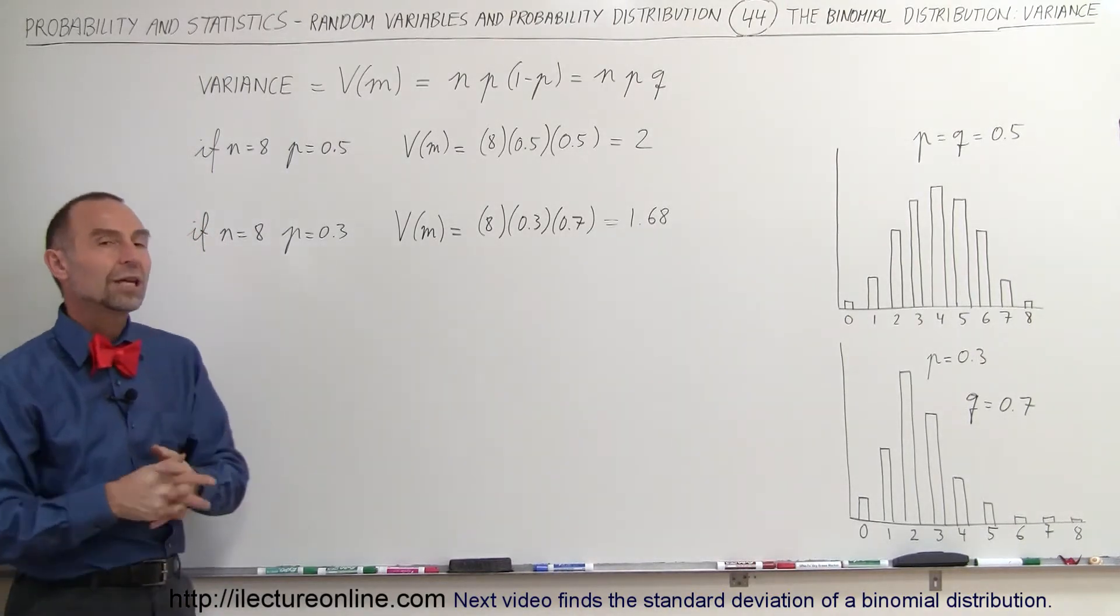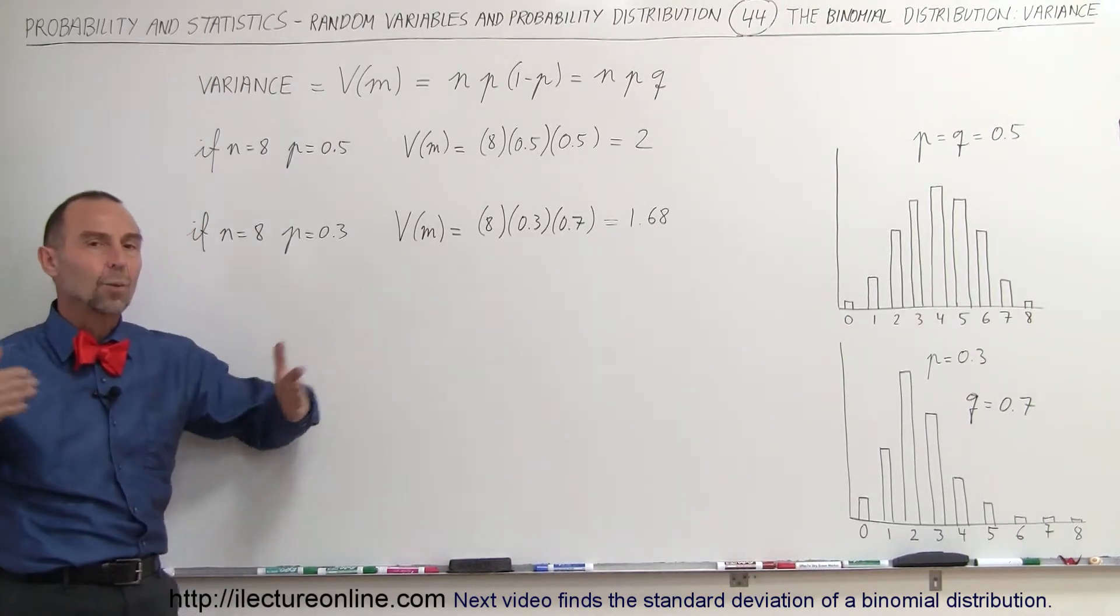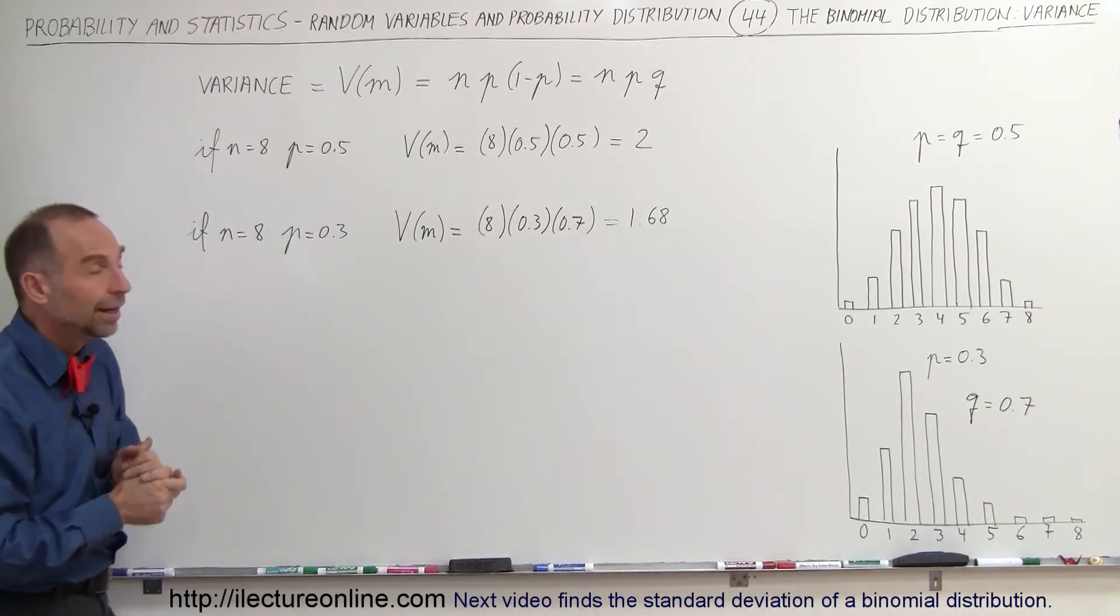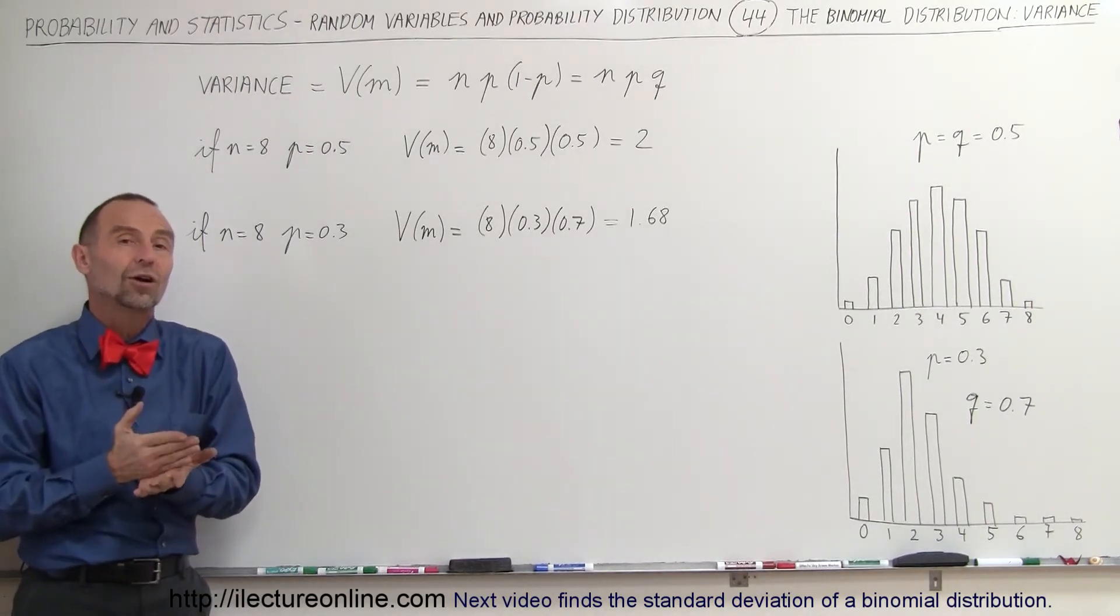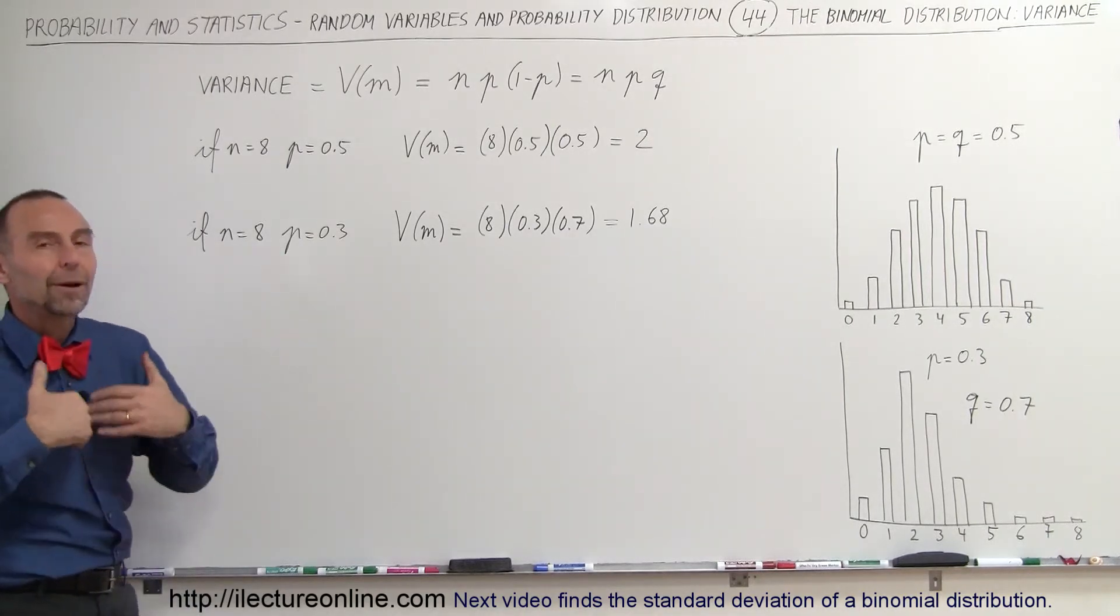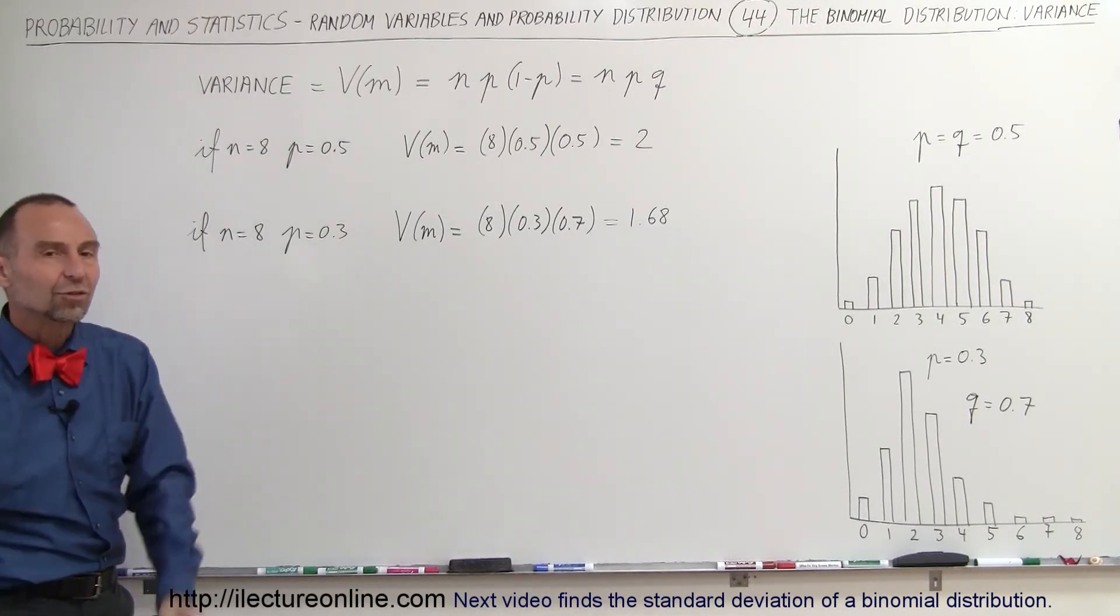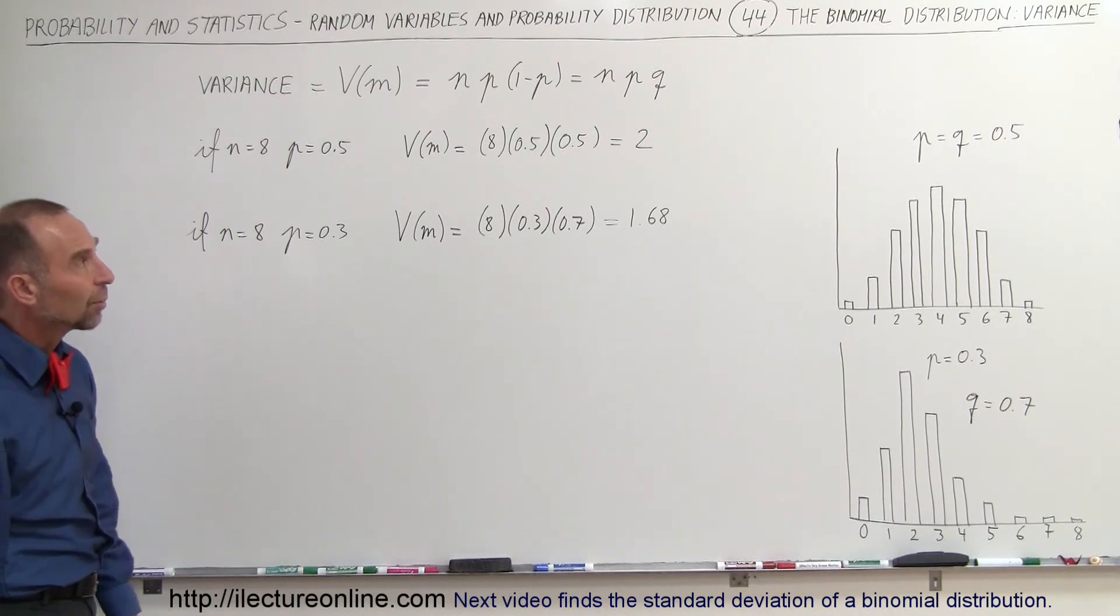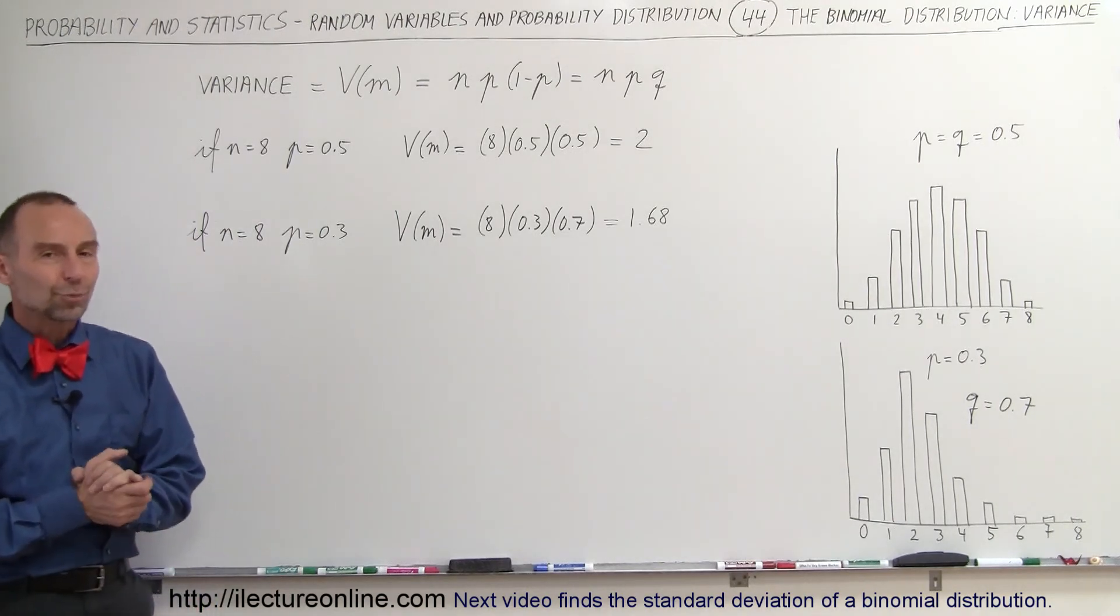So relative to the expected value, you can see how widely or closely spaced the data points are. In this case, the data points are the success points, the number of successes, the probability of success, and how that is spread apart. That is how we look at the variance for binomial distribution.